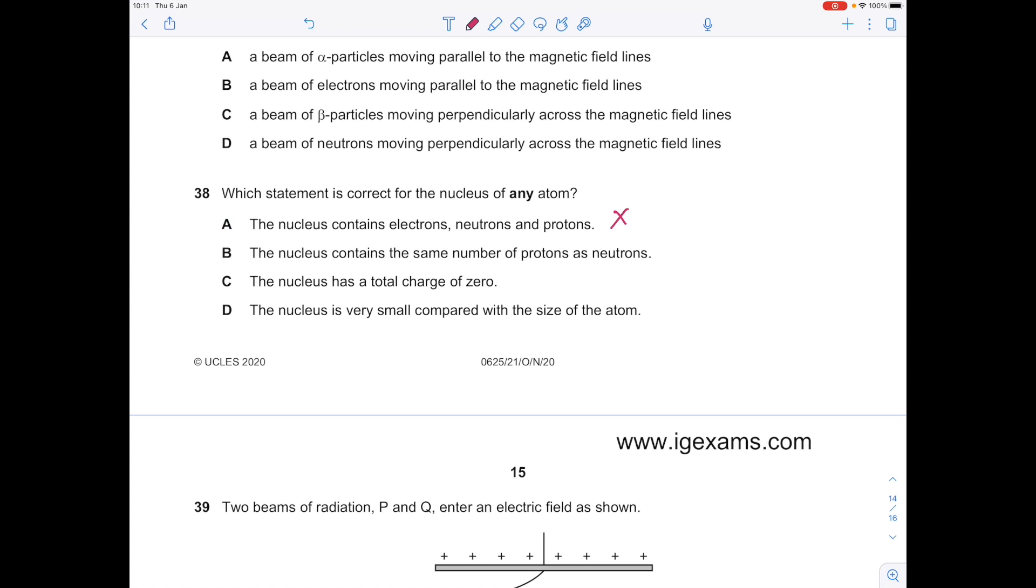Which statement is correct for the nucleus of any atom? The nucleus contains electrons, neutrons, and protons? No, because remember it's the shells that contain the electrons. The nucleus contains the same number of protons as neutrons? No, that doesn't hold true. The nucleus has a total charge of zero? No, because it contains positive charge and neutral charges. The nucleus is very small compared with the size of the atom? Yes, thank goodness, there's our answer.